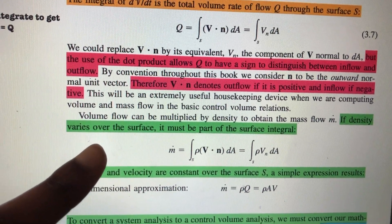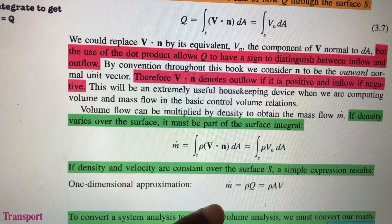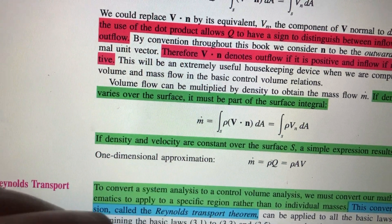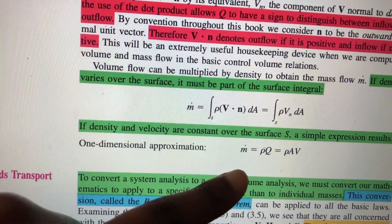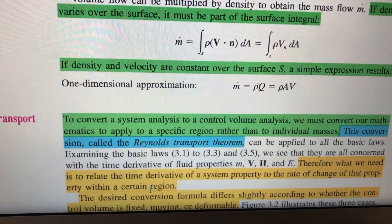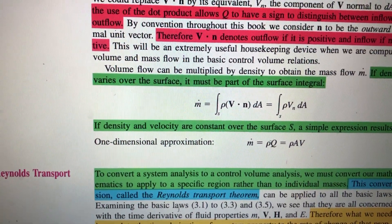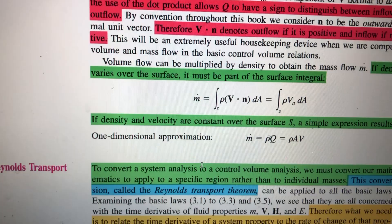For example, here it says that if the density varies over the surface then you have to use this integral. But if the density and velocity are constant over the surface, then you use this equation right here. Blue is for definitions.